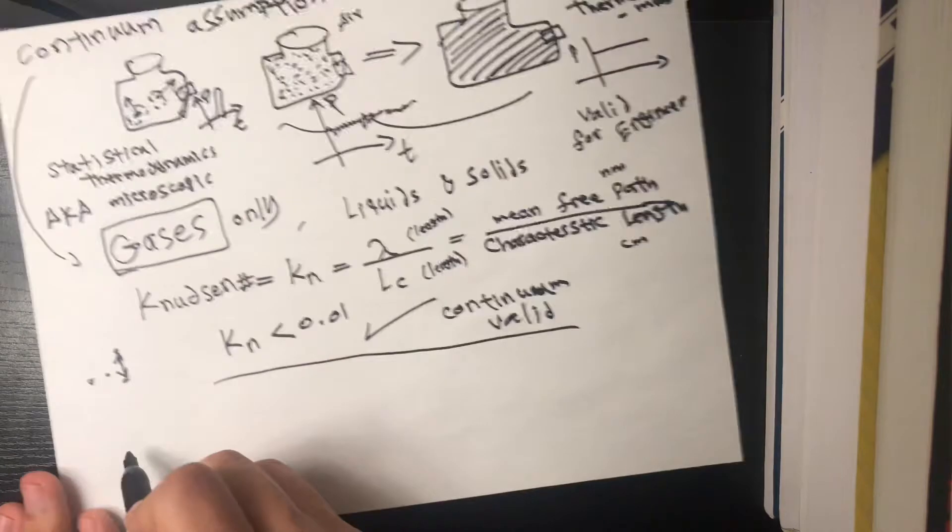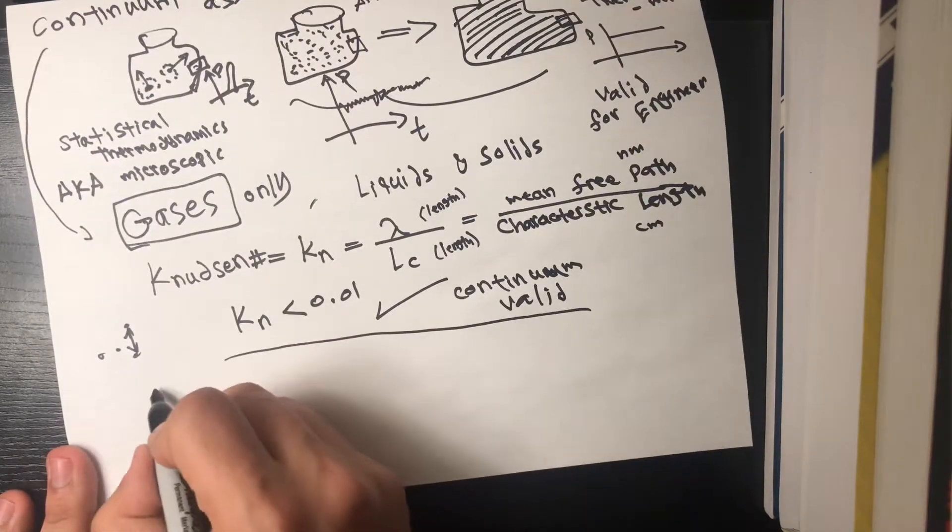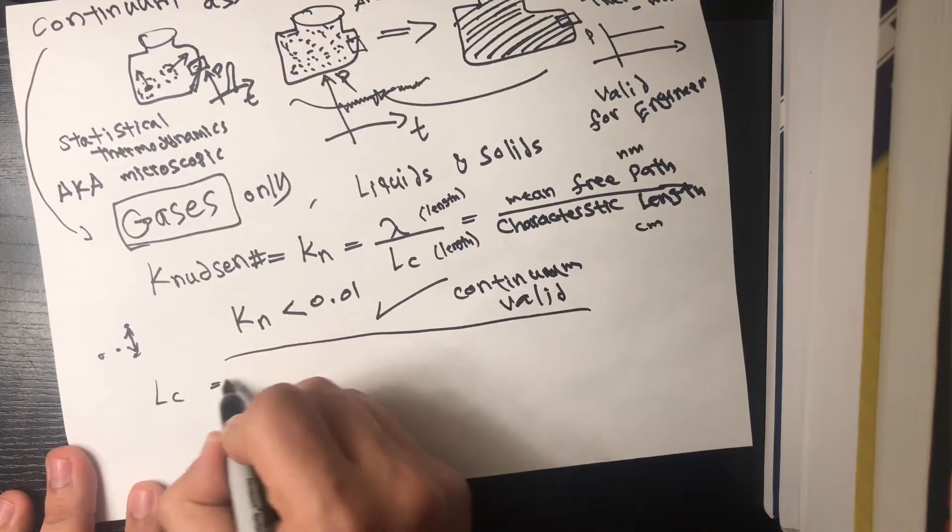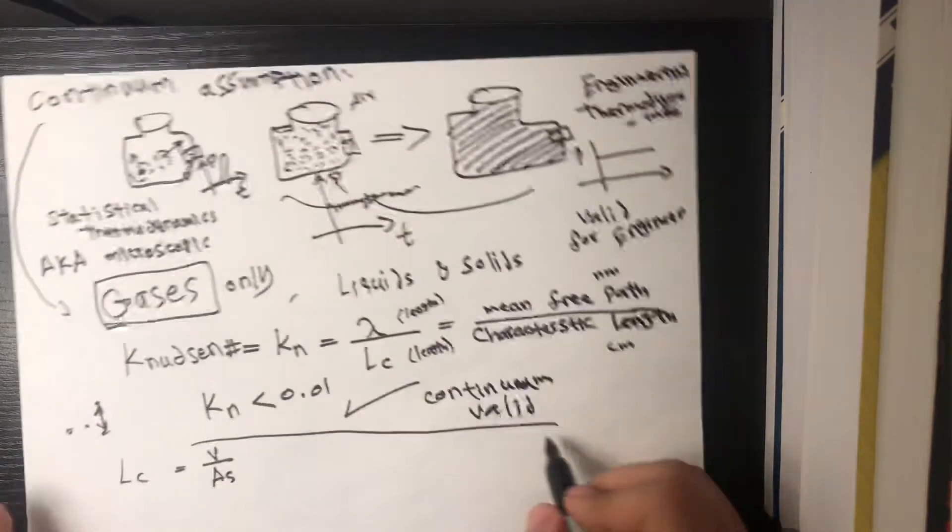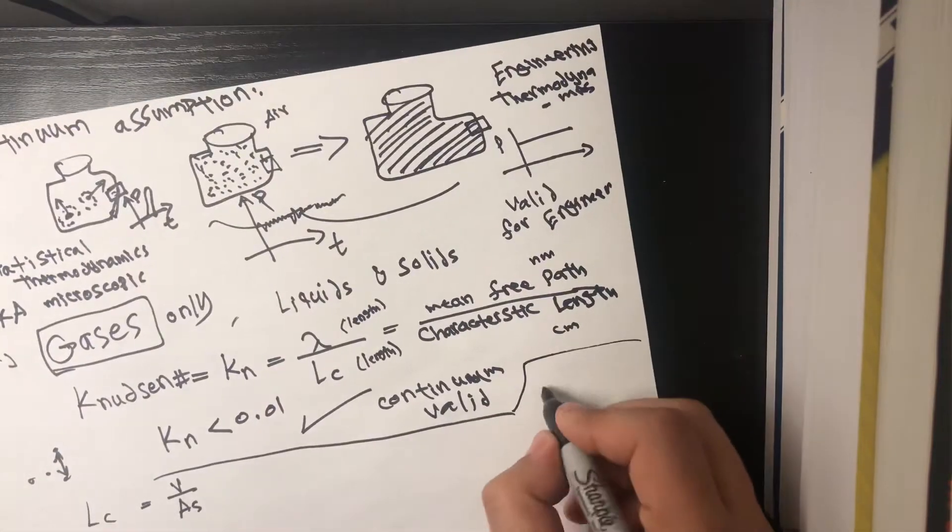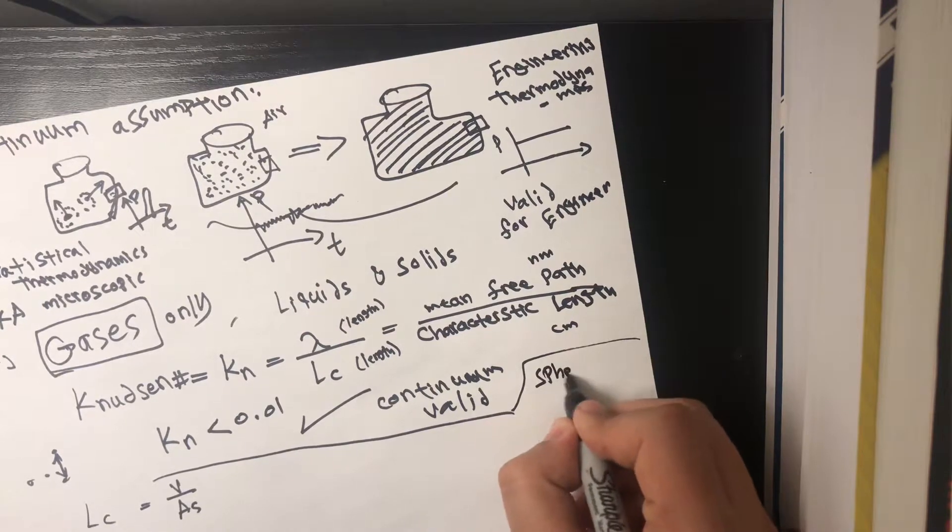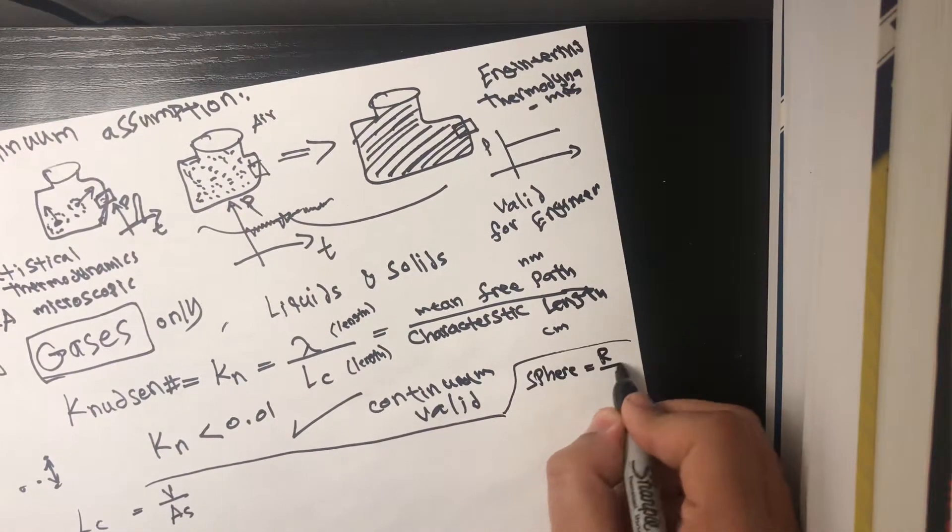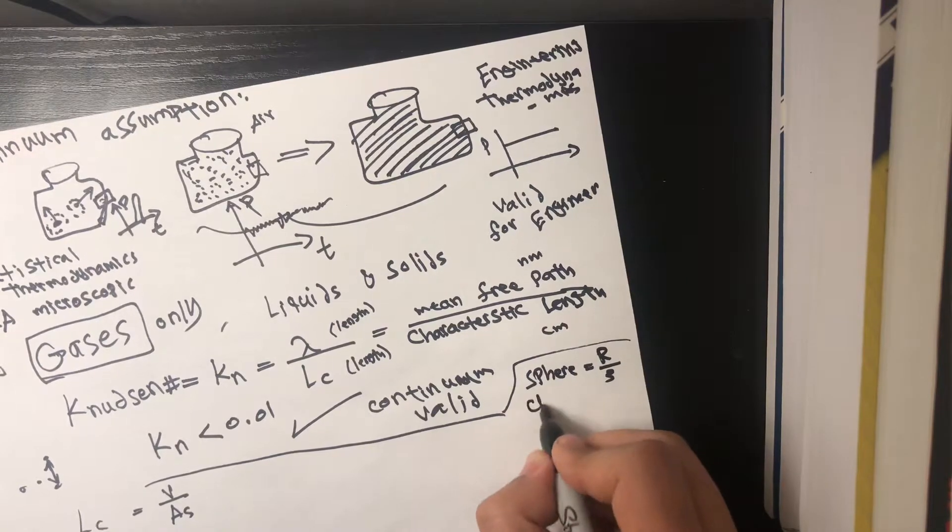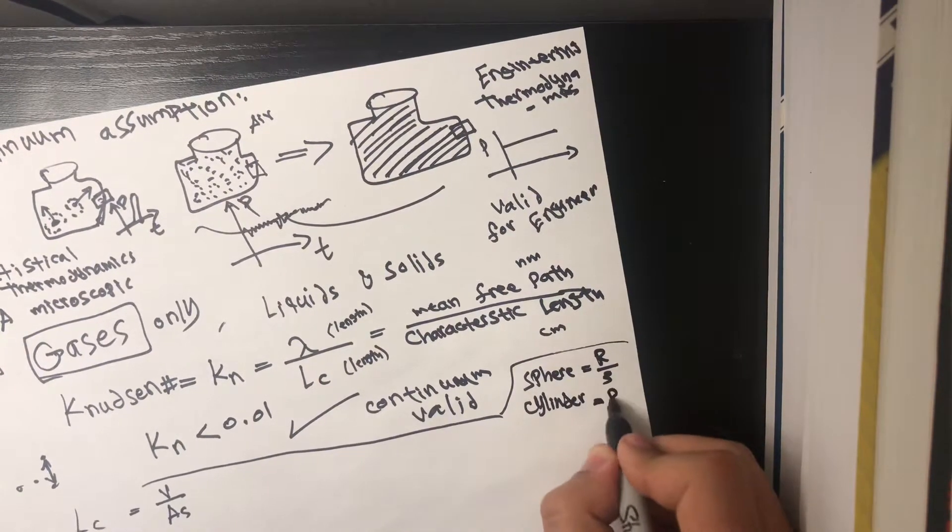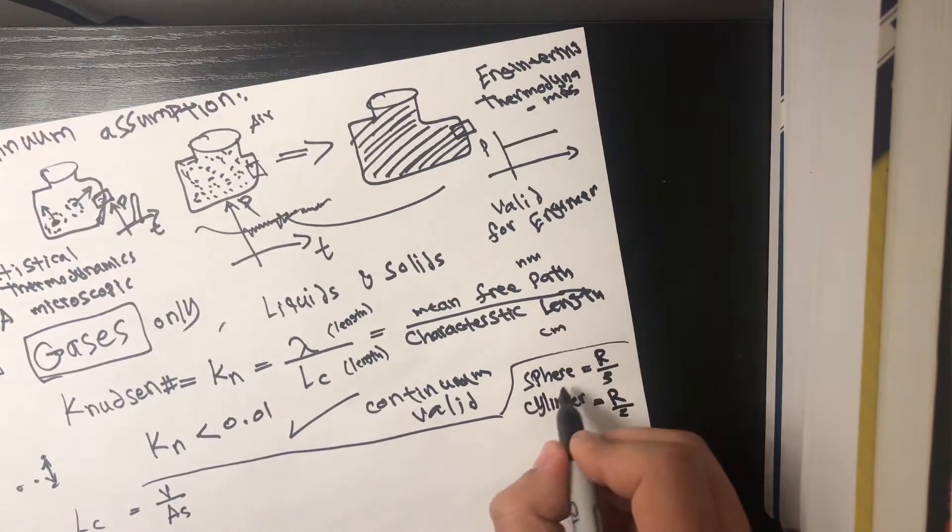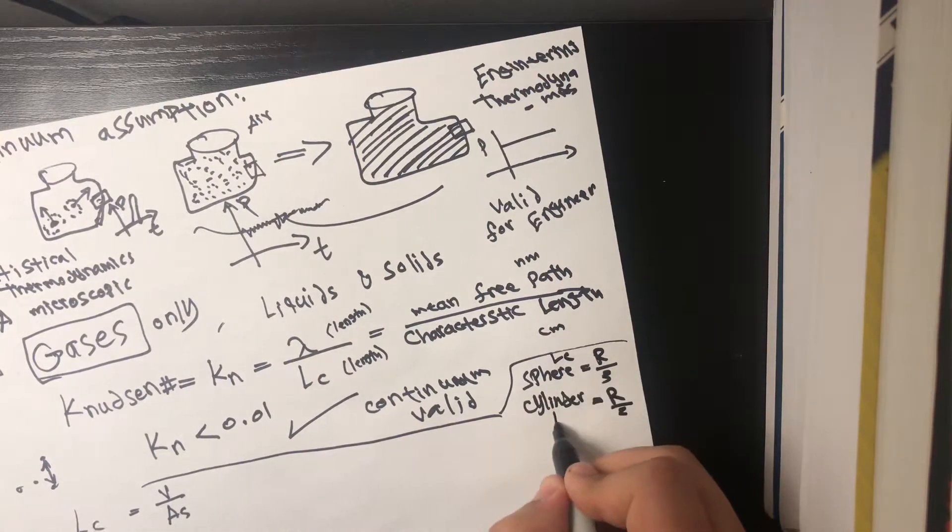But a common definition for the LC is usually, the characteristic length is usually equal to the volume over the surface area. So for a sphere, a sphere's characteristic length is usually r over three, and a cylinder is usually r over two.